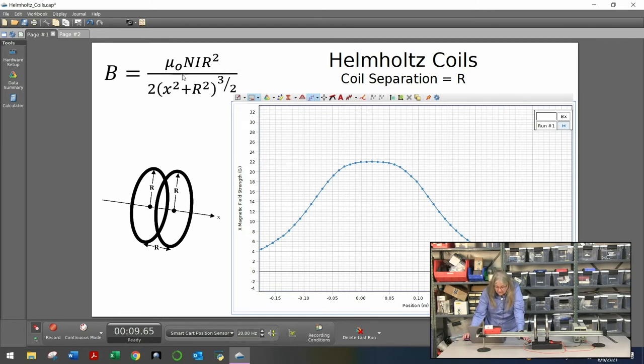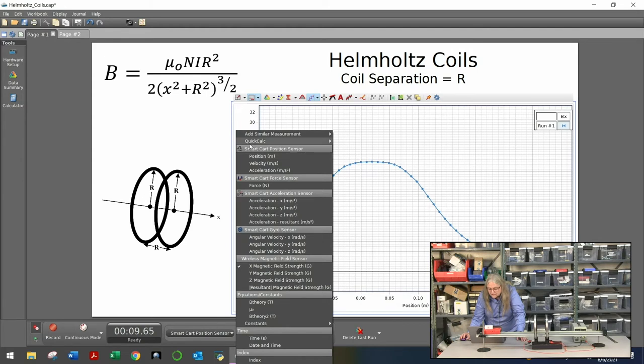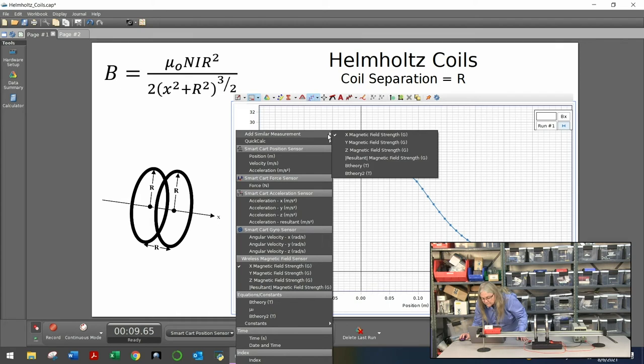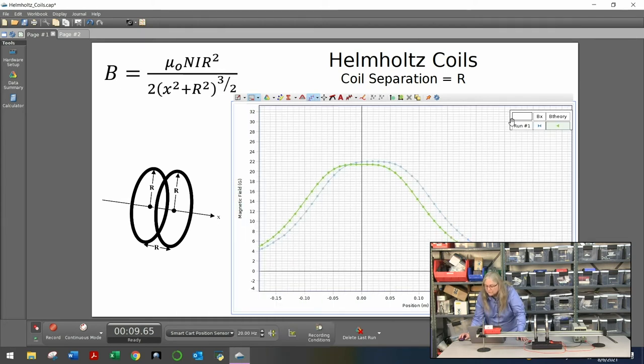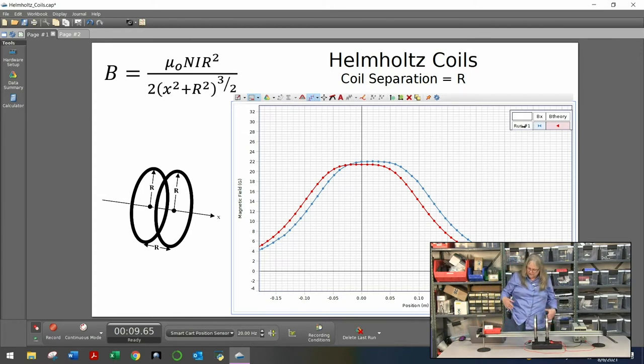Now, the equation for Helmholtz coils is, as a function of the x position through here, is given in this complicated equation right here, which I have put into the calculator in Capstone. So I'm going to add that calculation here to this... Come on. Here's the theoretical curve. And let me change the color here. I'll make it red. So there you see the theoretical curve is in red and the actual curve is in blue. And they match really well. And I didn't compensate for any of anything here. This is actual measurements. If I had zeroed correctly, they would have been lined right up on each other.